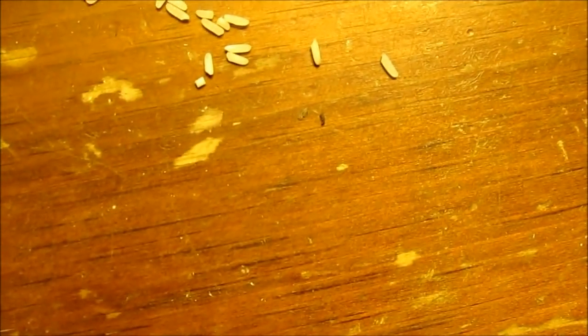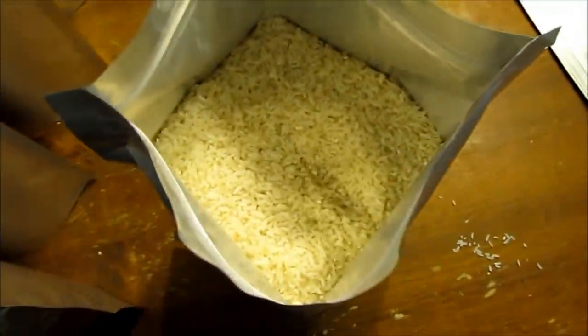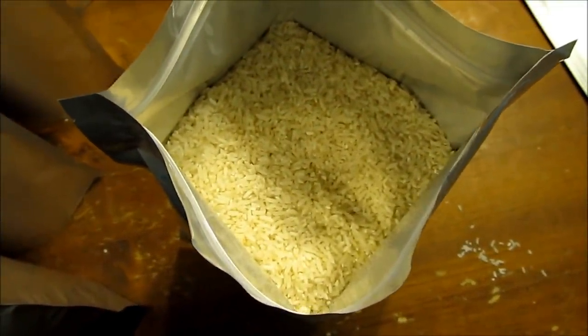Scooping it out with the measurer. Trying to keep an idea of how many cups for each bag. I think it's like four cups. But anyway, pouring it out and there's a weevil in it. So what am I going to do? I'm going to put an oxygen absorber in there and seal it up. See what happens.